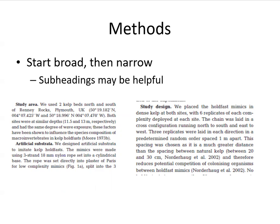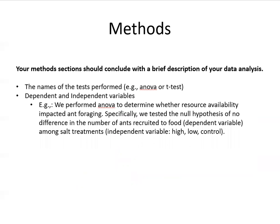Subheadings can break up your method section, which you will probably see a lot when trying to find papers. Your method section should conclude with a brief description of your data analysis, such as the name of tests that were performed — like an ANOVA or a t-test — as well as the dependent and independent variables.